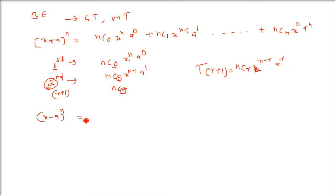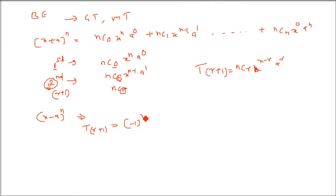If you have (x - a) to the power n, then for the general term T(r+1), you just substitute a as minus a. So it will be (-1)^r · nCr · x^(n-r) · a^r; everything else remains the same.